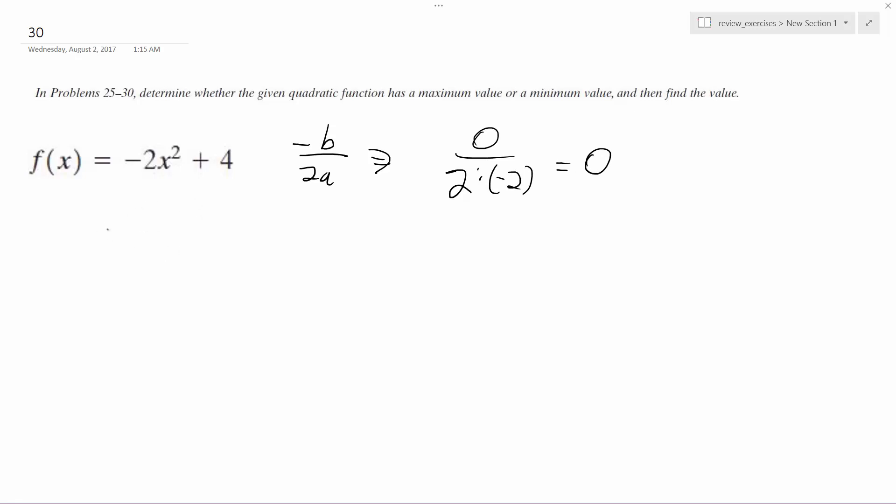So we plug 0 in to the formula, we get negative 2 times 0 squared plus 4, we get 4. So our high point, our maximum value,